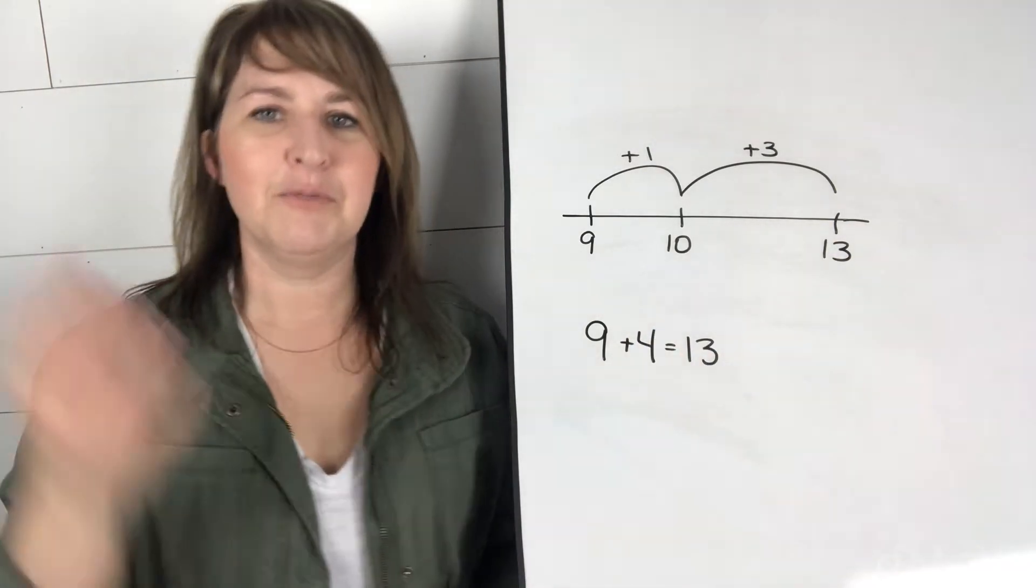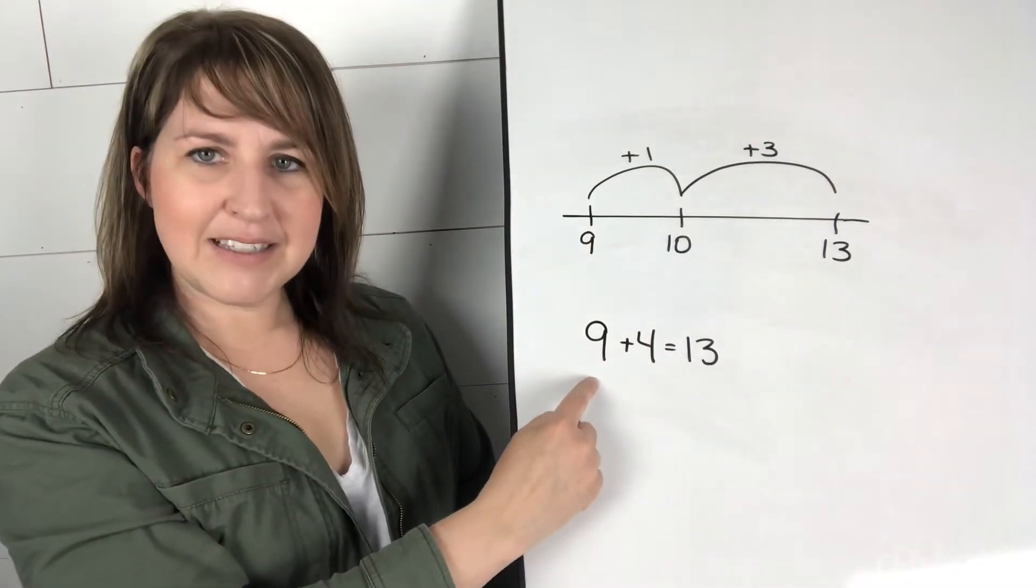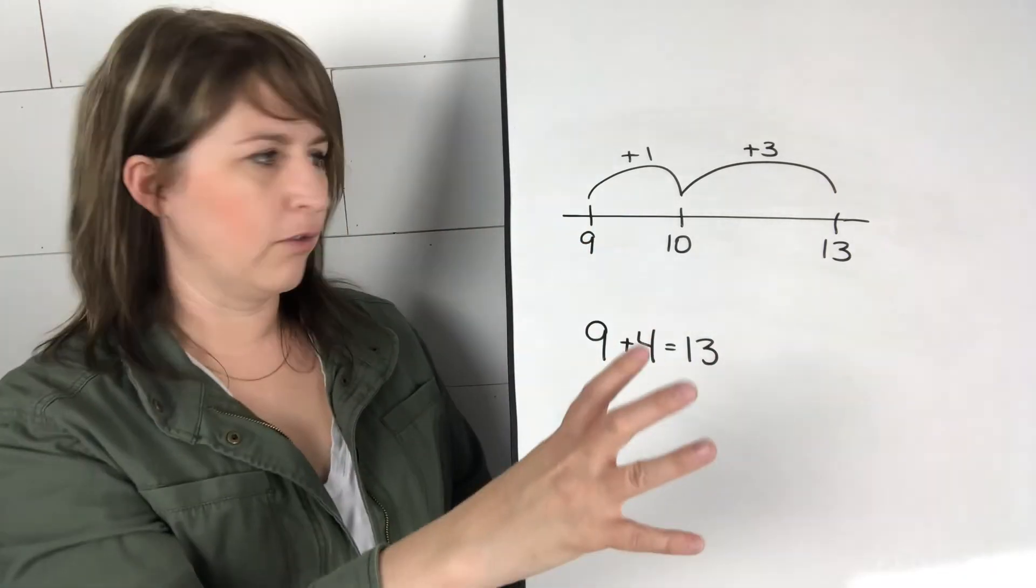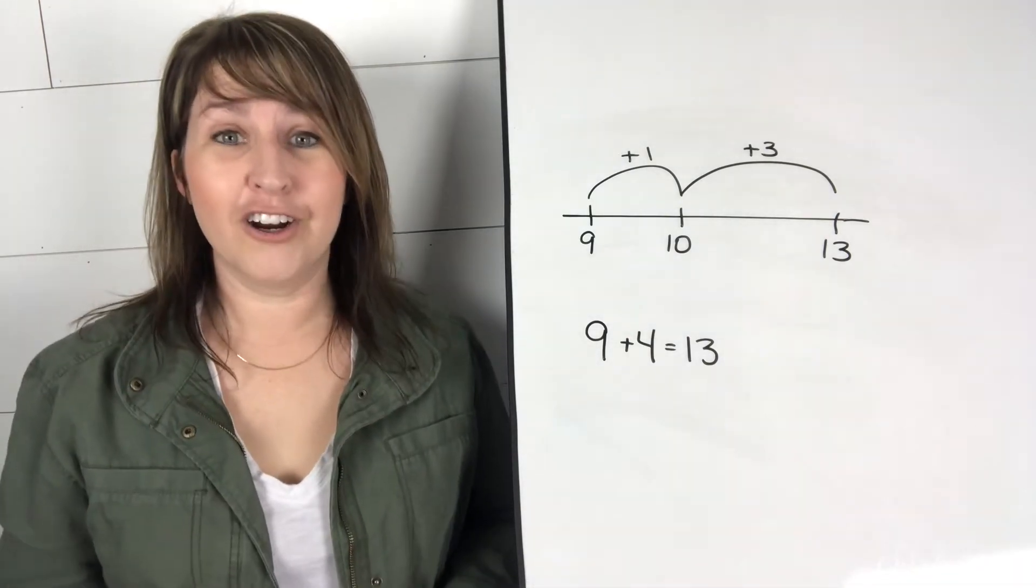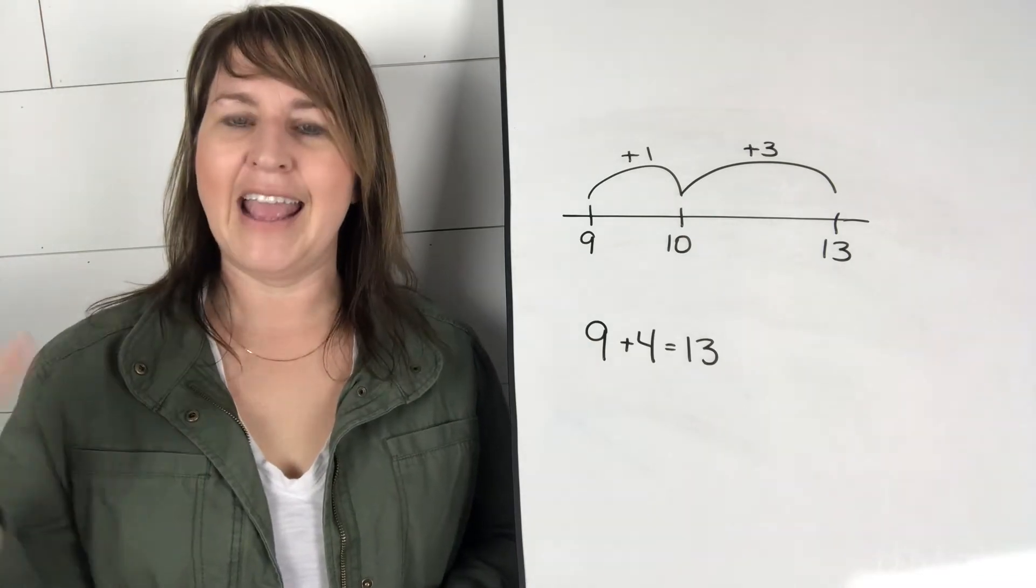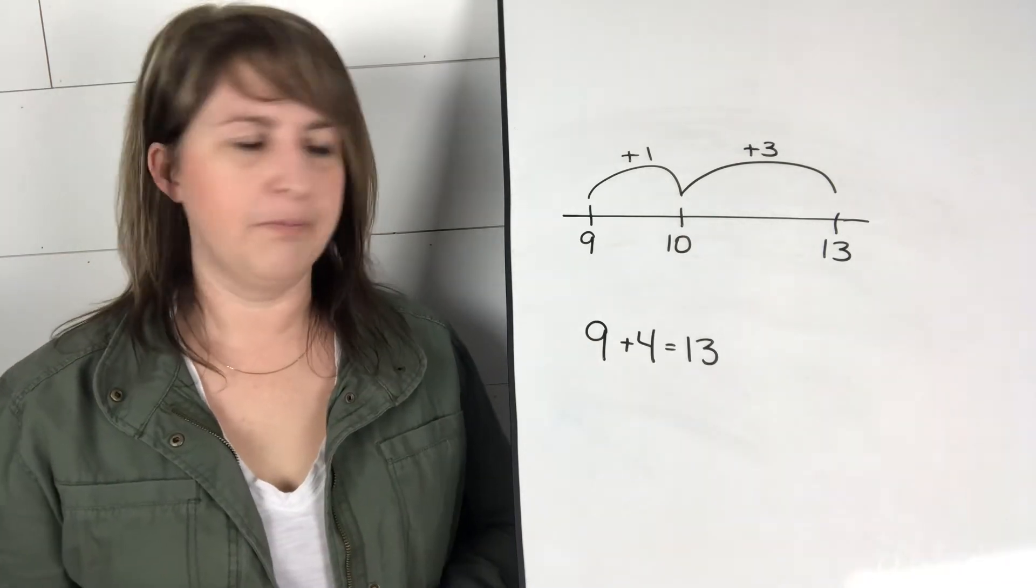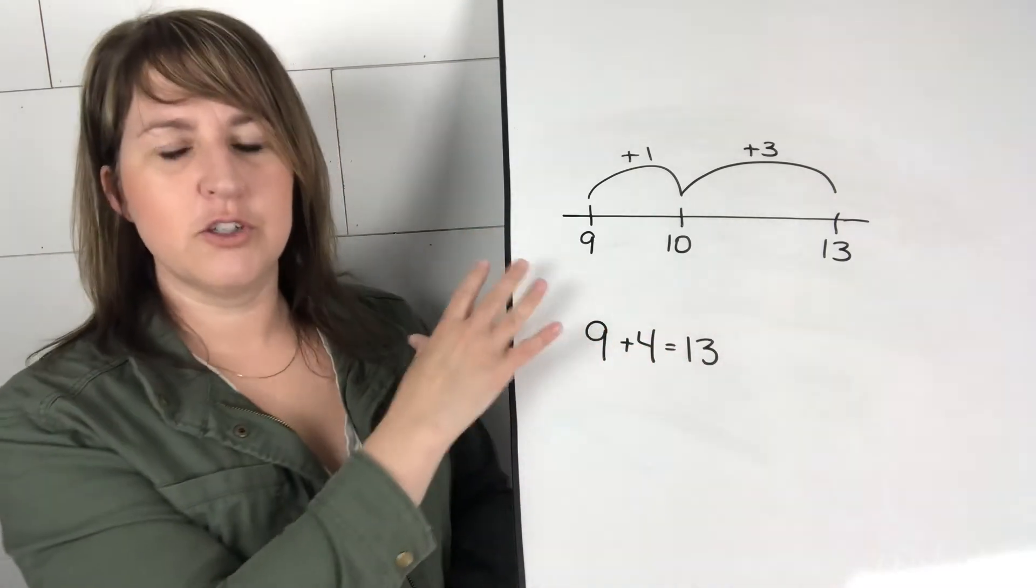So we're just expecting them to understand that concept of taking one from the four, giving it to the nine to make 10, and then using those three leftovers to make 13. However, that's a really hard thing to comprehend and it's a hard thing to see in your head when you have nothing to connect it to. Now if you are not working with low numbers in your classroom, obviously you could substitute these for higher numbers.